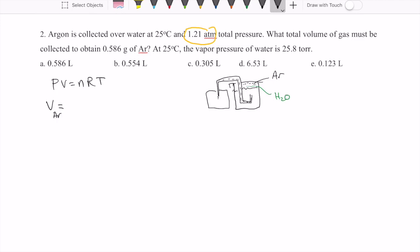So if we just want the volume of the argon, we're going to need to use nRT over P, but the P has to just be the P of the pure argon. So let's calculate that out. The P of the argon is going to be the total pressure that we have minus the pressure of the water vapor, 1.21 atmosphere.